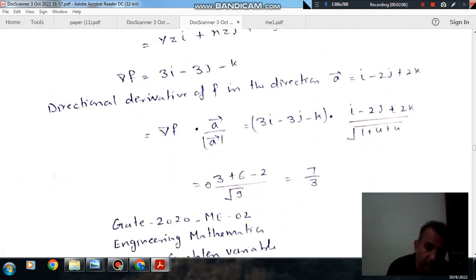The directional derivative is the dot product: 3(1) + (-3)(-2) + (-1)(2) = 3 + 6 - 2. That will be 9 - 2 = 7, divided by root 9, which gives 7/3. This is the right answer.